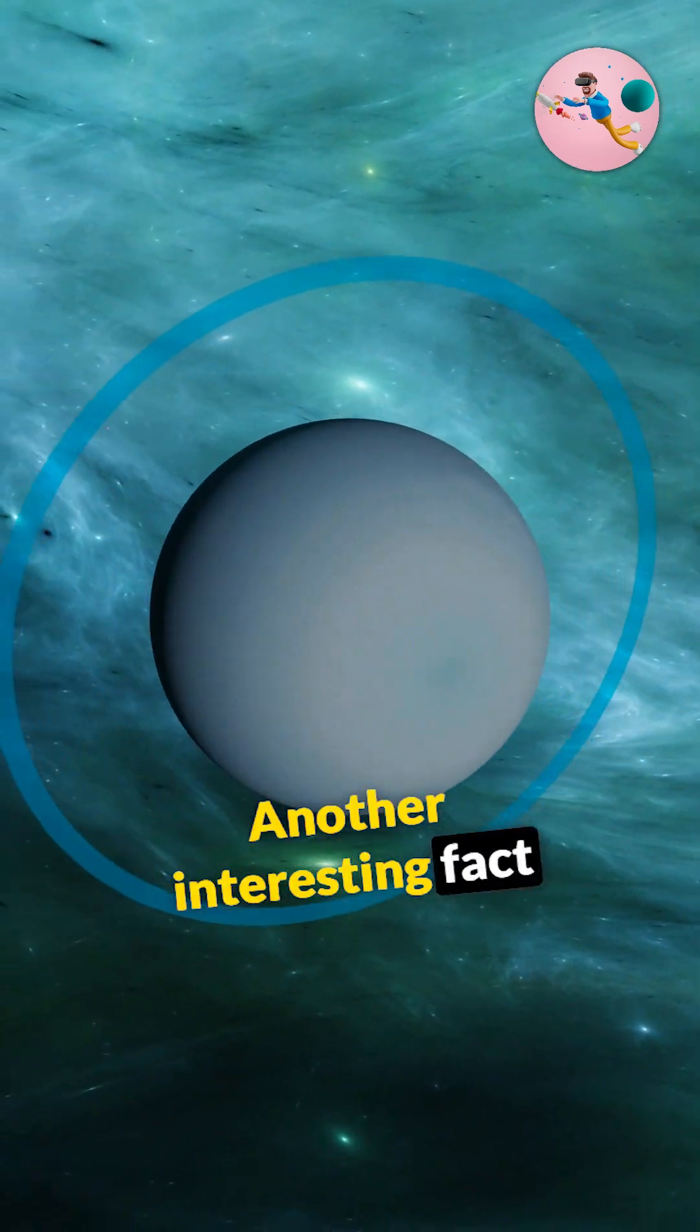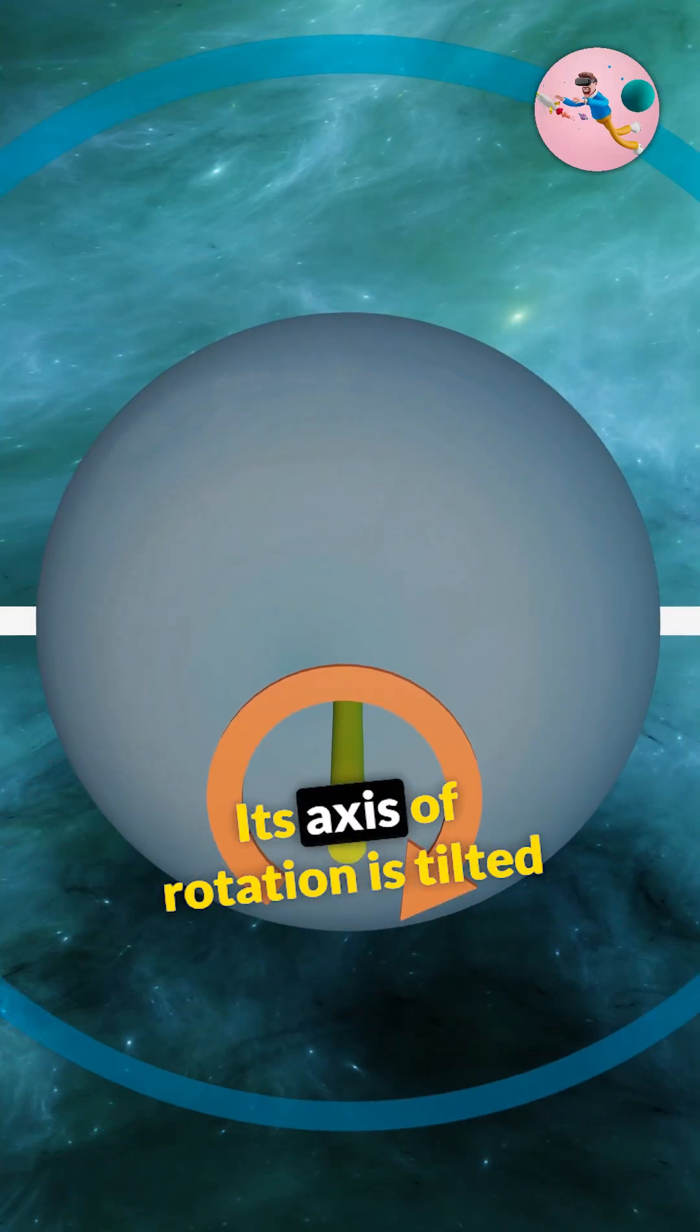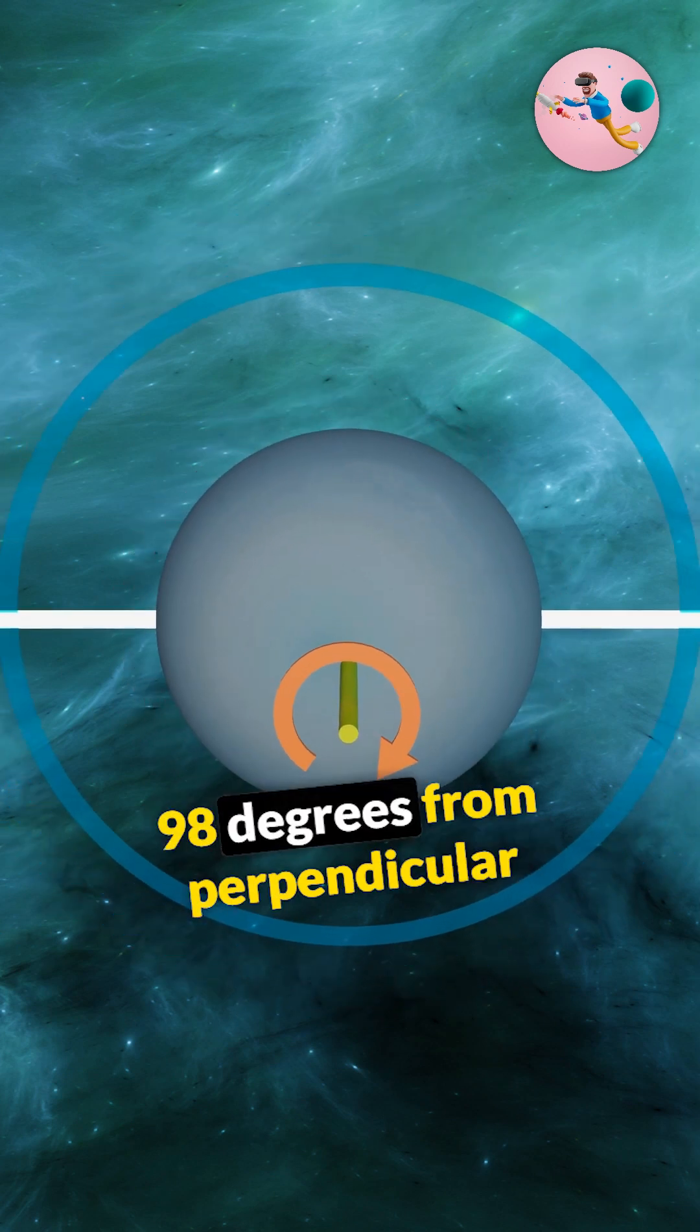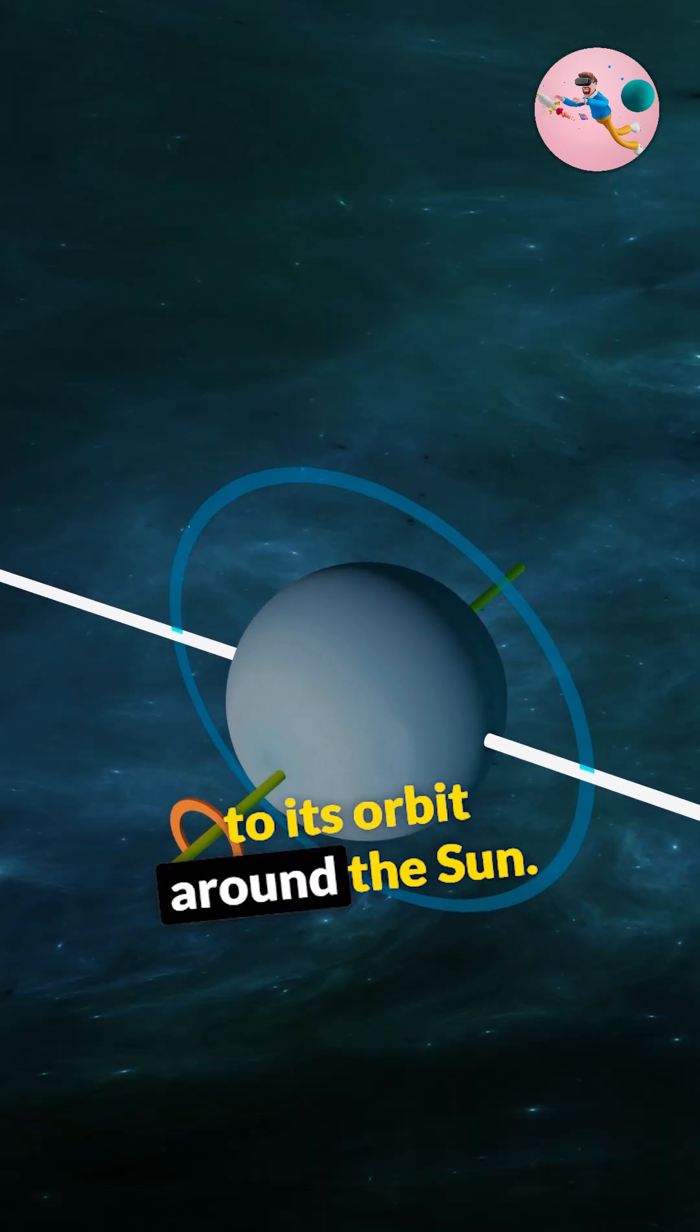Another interesting fact about Uranus is its tilted axis. Its axis of rotation is tilted 98 degrees from perpendicular to its orbit around the Sun.